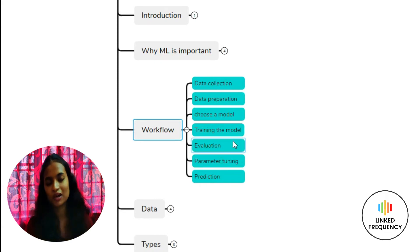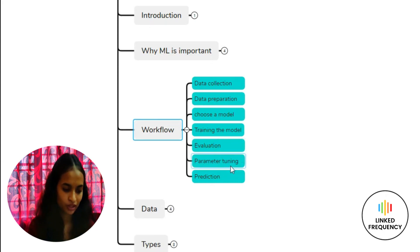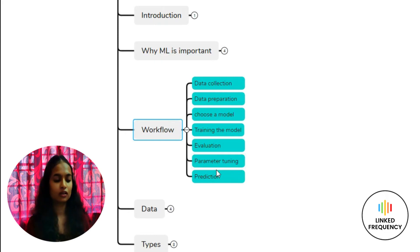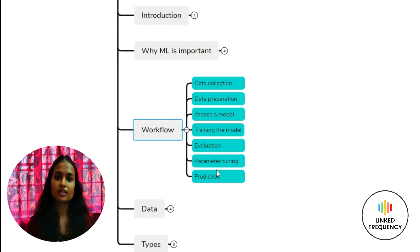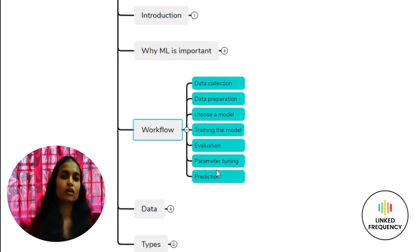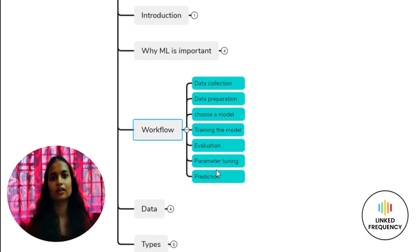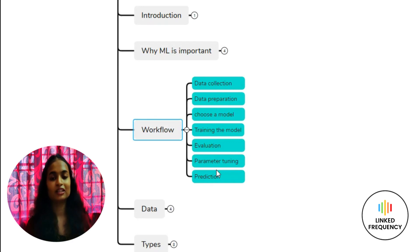Step 6 is Parameter Tuning. After successfully completing the evaluation step, you move to parameter tuning, where you improve an already well-performing model. For example, you can adjust the number of training steps through trial and error or experimentation to find the particular configuration that best suits your problem statement, yielding more accurate results.